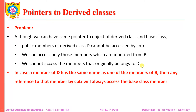In case a member of class D has the same name as one of the members of class B, then any reference to that member by CPTR will always access the base class member.